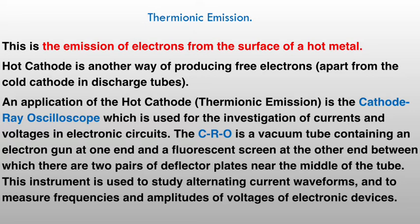It's right on this channel. Hot cathode is another way of producing free electrons — apart from the discharge tubes where you can have cold cathodes, a hot cathode produces free electrons through a process called thermionic emission. One very common application of this is the cathode ray oscilloscope, called the CRO, which is used for investigation of currents and voltages in electronic circuits. It's a vacuum tube that contains an electron gun at one end and a fluorescent screen at the other end, with deflector plates somewhere in the middle. The instrument is used to study alternating current waveforms and to measure frequencies and amplitudes of voltages of electronic devices.